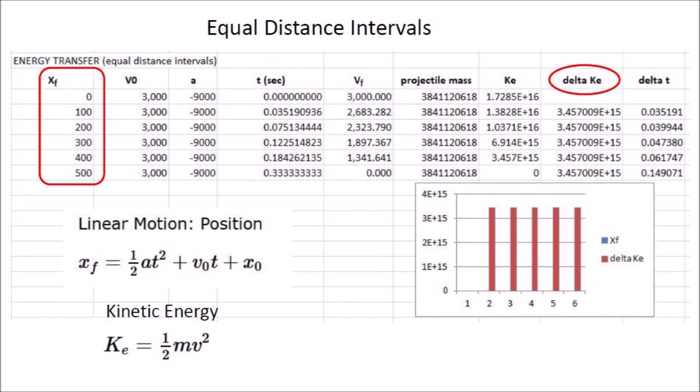This spreadsheet was used to calculate the energy spent during equal distance intervals of 100 meters. The left column shows the distances from 0 to 500 meters, which is when the projectile comes to rest. The chart on the right shows that change in kinetic energy is the same for each 100 meter interval.